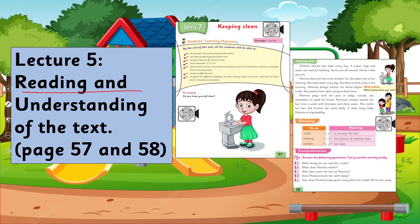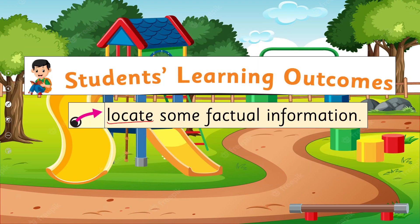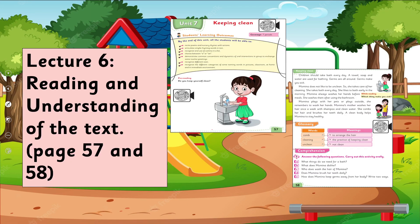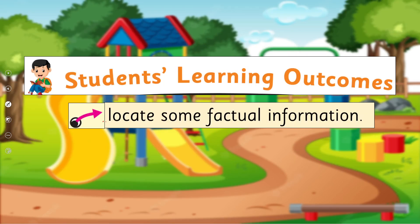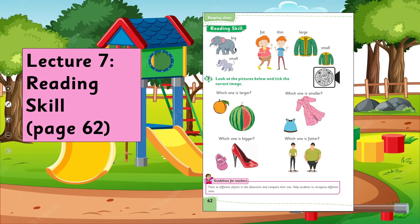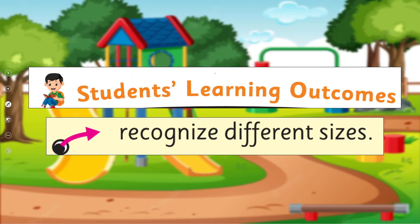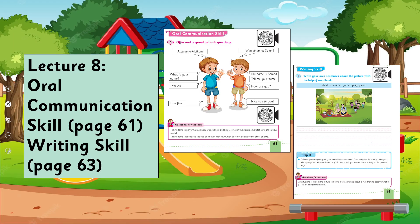Lecture 5, we'll start reading and understanding the text of this unit, and we'll cover the SLO to locate some factual information. Lecture 6, we'll continue reading, understanding, and comprehension of this unit, covering the SLO to locate some factual information. Lecture 7, we'll do a reading skill activity and cover the SLO to recognize different sizes.